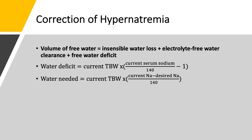I'm going to summarize what we talked about regarding correction of hypernatremia. First, we calculate water deficit. Water deficit is current total body water multiplied by (current serum sodium divided by 140) minus 1. Then we add this water deficit to insensible water loss, which is about 0.8 liters per day, plus electrolyte-free water clearance.